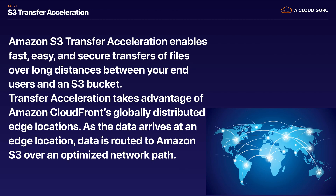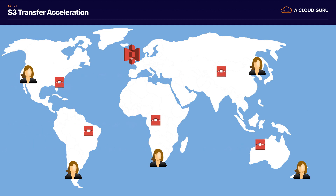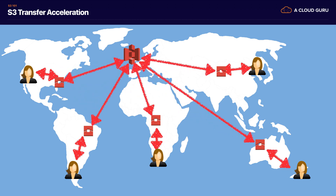S3 Transfer Acceleration enables fast, easy, and secure transfers of files over long distances between your end users and an S3 bucket. It takes advantage of Amazon CloudFront's globally distributed edge locations — data arrives at an edge location and is routed to Amazon S3 over an optimized network path using Amazon's Backbone Network. Users upload files to the edge locations rather than the S3 bucket itself, which can really speed up upload times. We're going to have a lab to see how it works from different locations around the world.